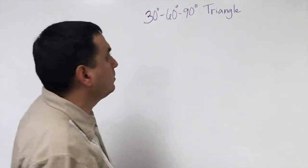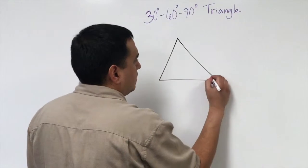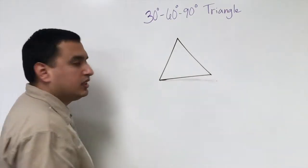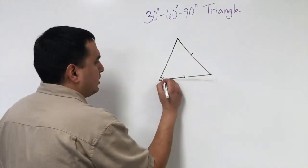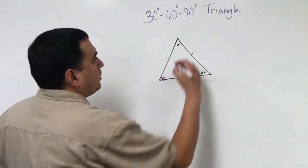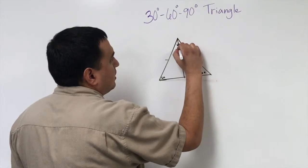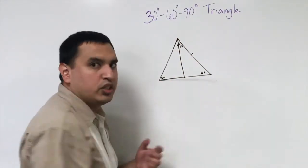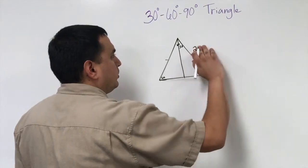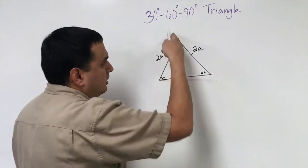Now we're going to derive the formula for the 30-60-90 triangle. We start by drawing an equilateral triangle, where all sides are the same and all angles are 60°. To get the 30-60-90, we cut this triangle in half, which splits the 60° angle into 30°. If we let the sides be 2a, then this base side is also 2a.